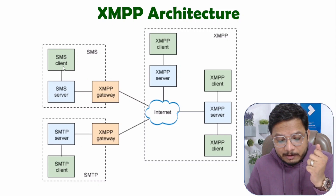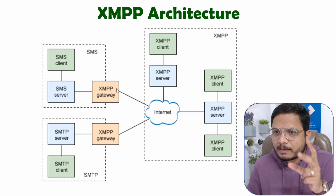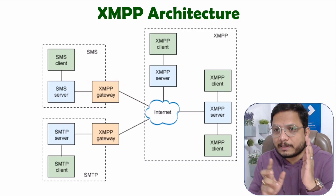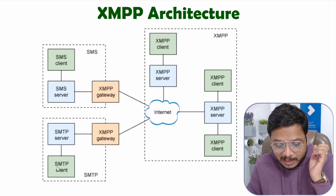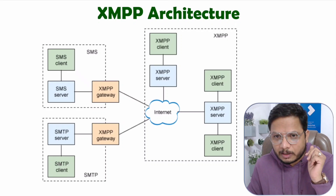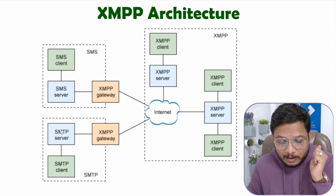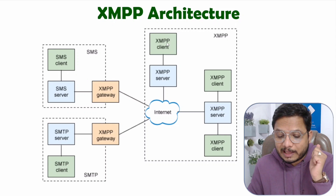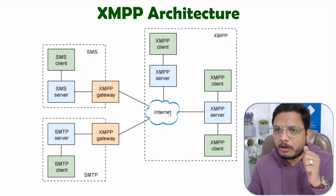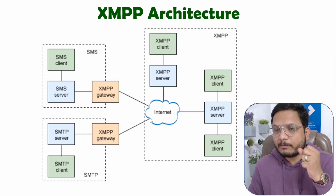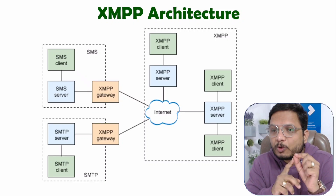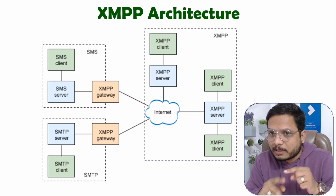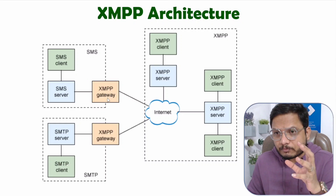In the architecture, an SMS client connects to an SMS server, and for interconnection of SMS with XMPP there is an XMPP gateway. The XMPP gateway provides interconnection of other protocols with XMPP. Within the XMPP architecture, XMPP clients are connected with an XMPP server, and on the internet all servers are allowed to interconnect with each other.